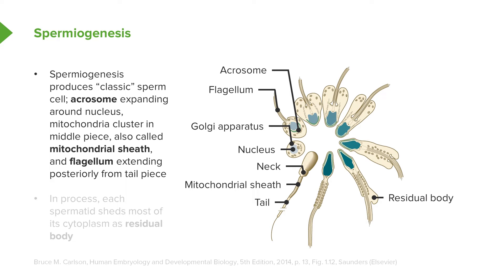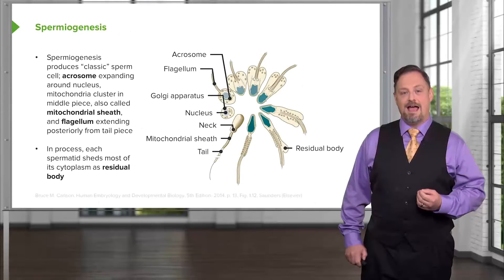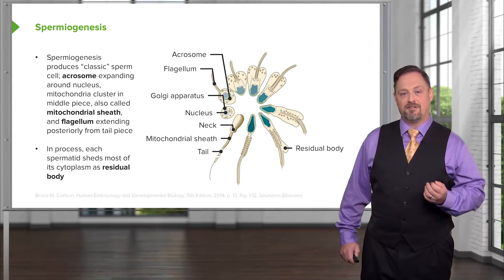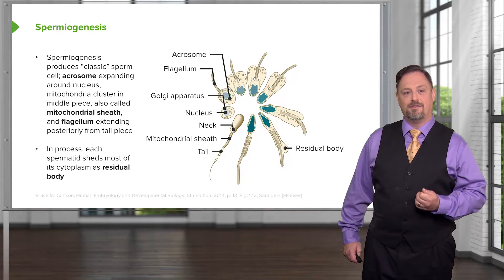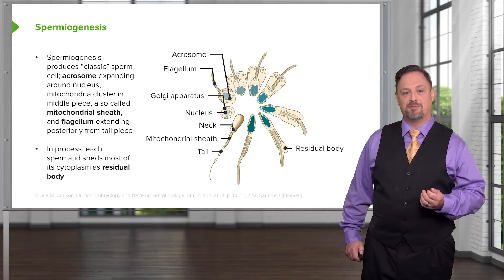The mid-piece contains the powerhouse of the spermatozoa, which allows the flagellum to move and keep the sperm mobile and moving forward once it has entered the female reproductive tract. As it sheds all of its cytoplasm — except for the little bit maintaining the nucleus, the acrosome, the mitochondrial sheath, and the tail — the nearby supporting cells are going to absorb those residual bodies.